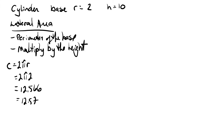Now we can find the lateral area. The lateral area is equal to twelve point five seven times the height which is ten, and multiplying that out we end up with one hundred and twenty five point seven.